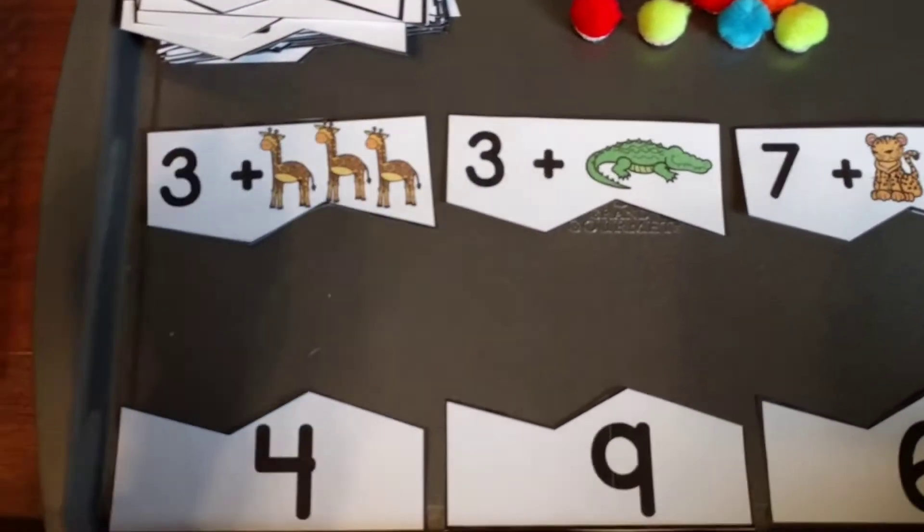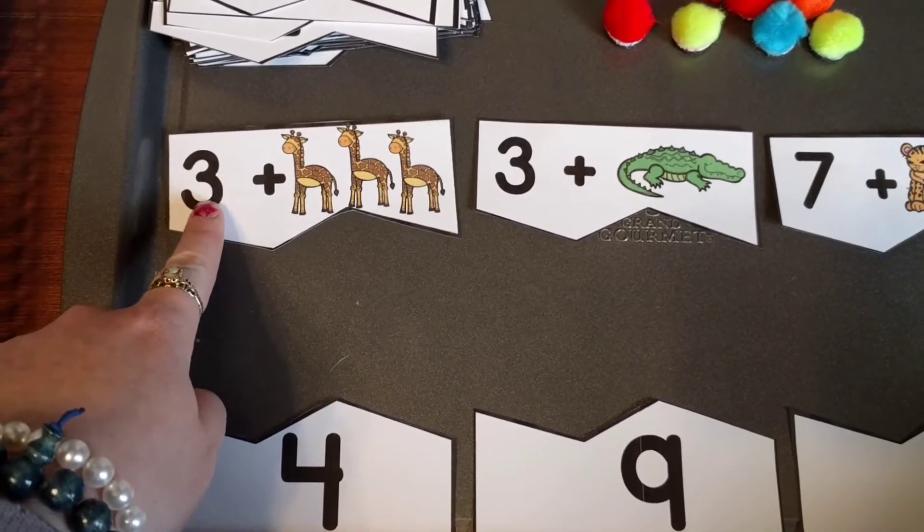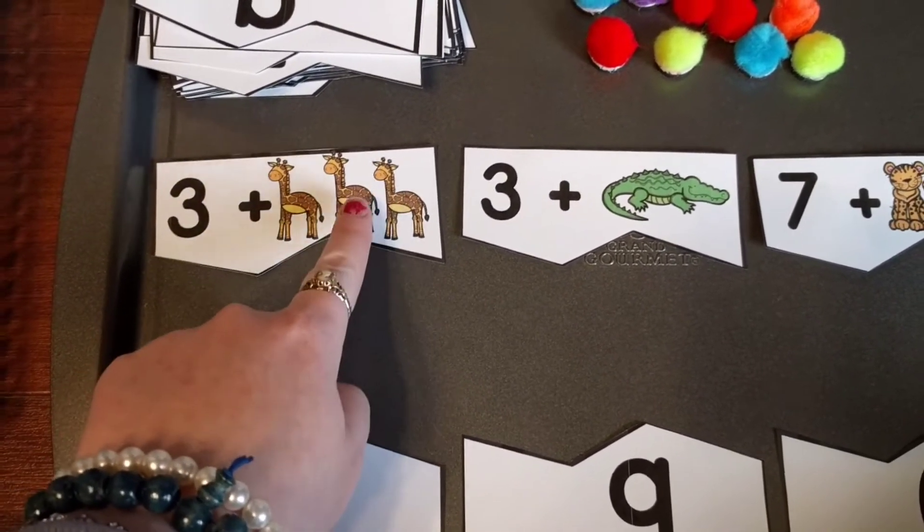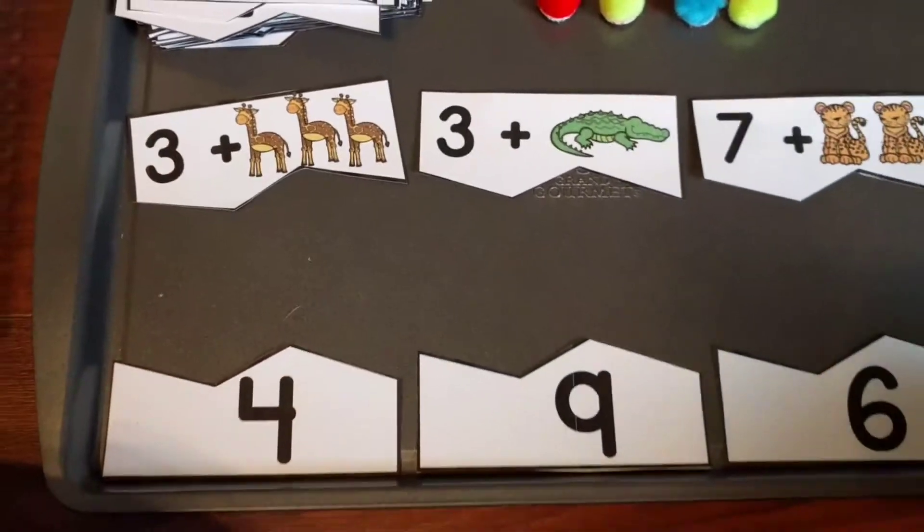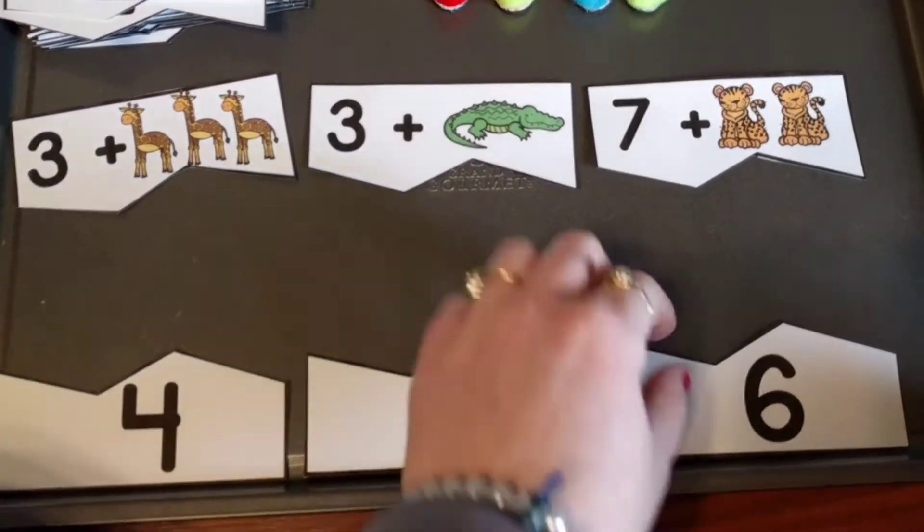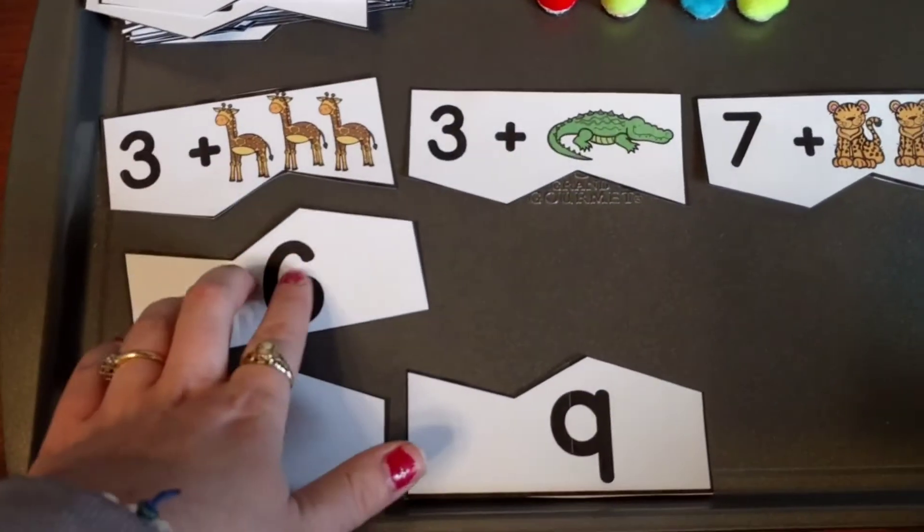So here on this puzzle, they can say the number 3, and then they would count on 4, 5, 6. And then they would look down here, find the 6, and match up their puzzle.